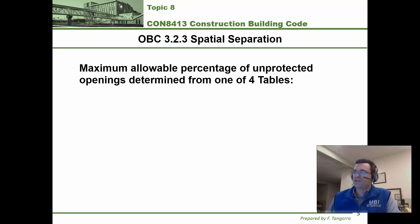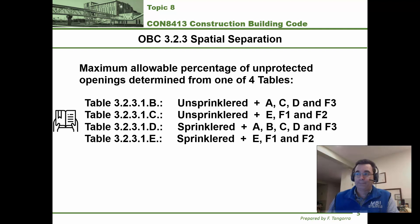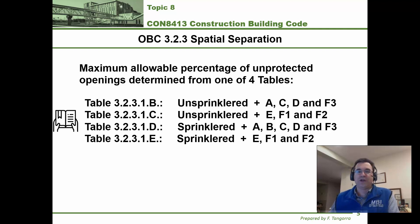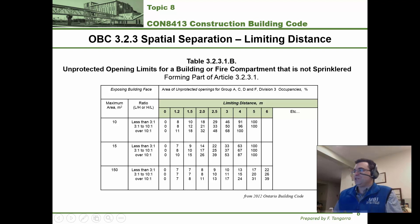These four tables are set up as follows. Table 3.2.3.1b covers unsprinklered occupancies A, C, D, and F3. Table 3.2.3.1c covers unsprinklered occupancies E, F1, and F2. The D table covers sprinklered occupancies A, B, C, D, and F3, whereas the E table covers sprinklered occupancies E, F1, and F2. You don't have to learn this by heart because the title of each table tells you exactly what occupancies it covers and whether it's for sprinklered or unsprinklered.